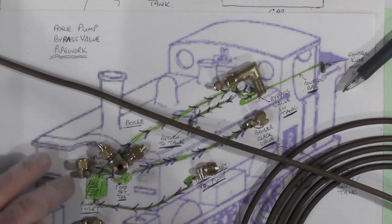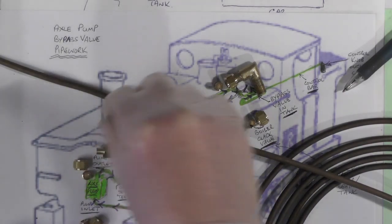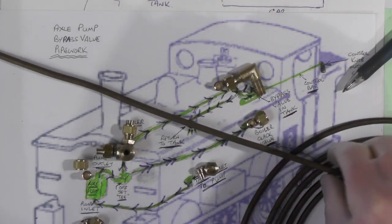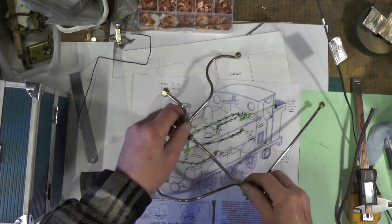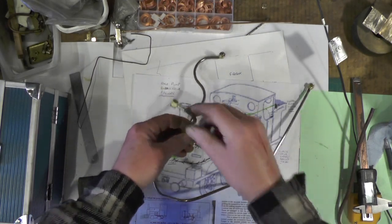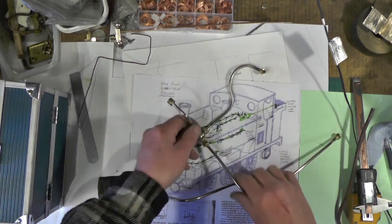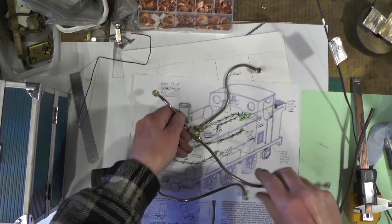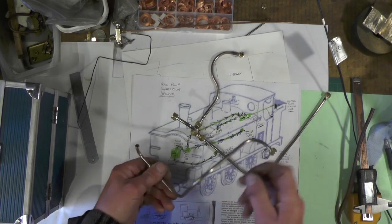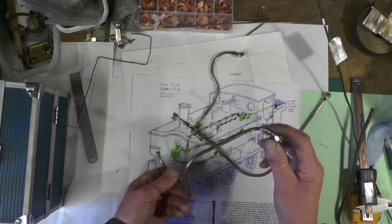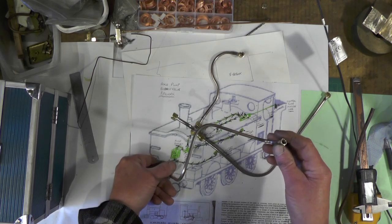I've got all my union nuts, nipples, tees, elbow all ready now. I've got the pipe. I've managed to get all the parts made now so I'll go over to Loco and try to fit these on. So that one's going to the axle pump, that one's going to the clack valve and that one's going to the bypass valve, then I've got this one is going from the tank feed from the tank to the bottom of the axle pump.